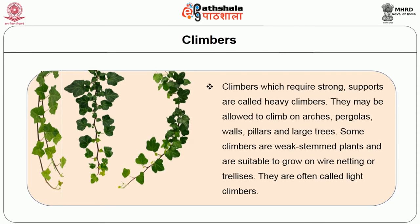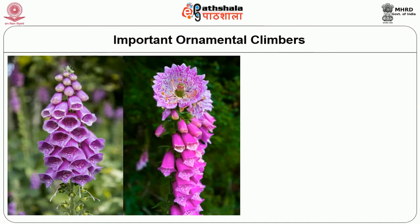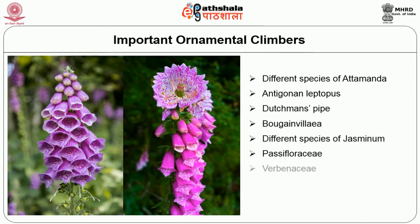Climbers which require strong support are called heavy climbers — they may be allowed to climb on arches, pergolas, walls, pillars and large trees. Some climbers are weak-stemmed plants suitable to grow on wire netting or trellises, and are often called light climbers. Important ornamental climbers include an evergreen climber with luxurious growth and bunches of terminal bell-shaped flowers, pale to blue in colour, blooming during March and July. Different species of Allamanda, Antigonon leptopus (Dutchman's pipe), bougainvillea, different species of jasmine, Passifloraceae, Verbenaceae, money plant and goosefoot plant are some of the important climbers used in landscape gardens.